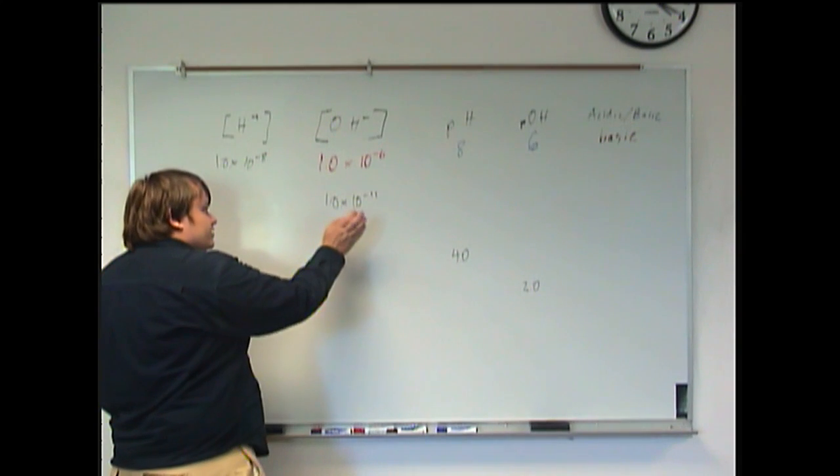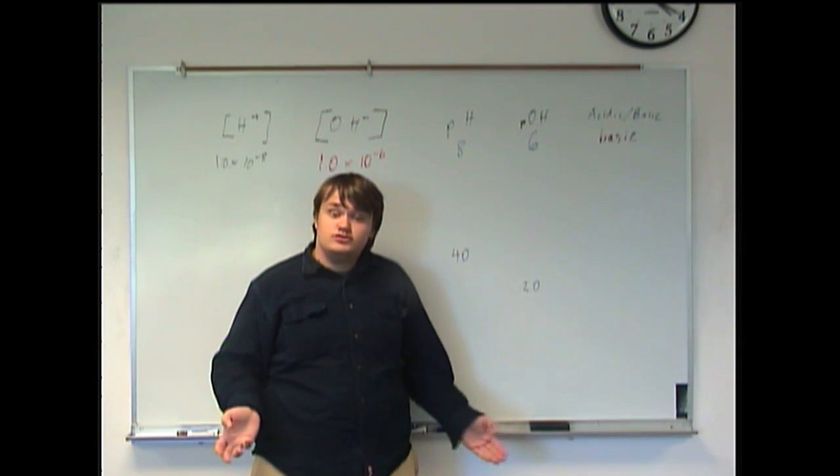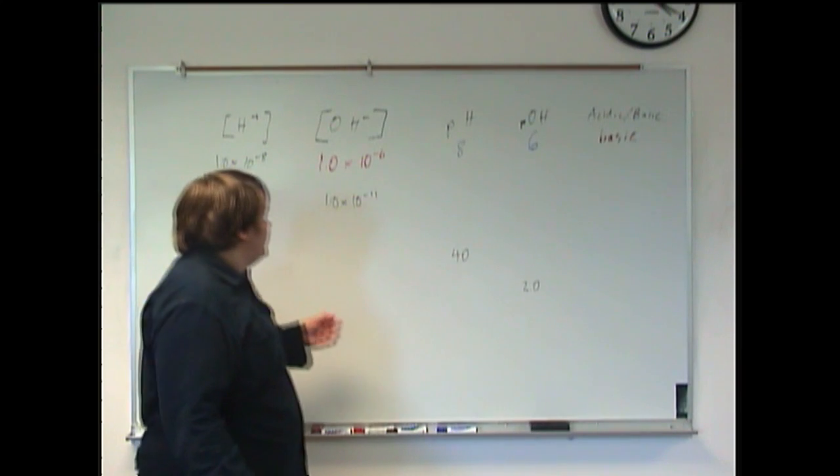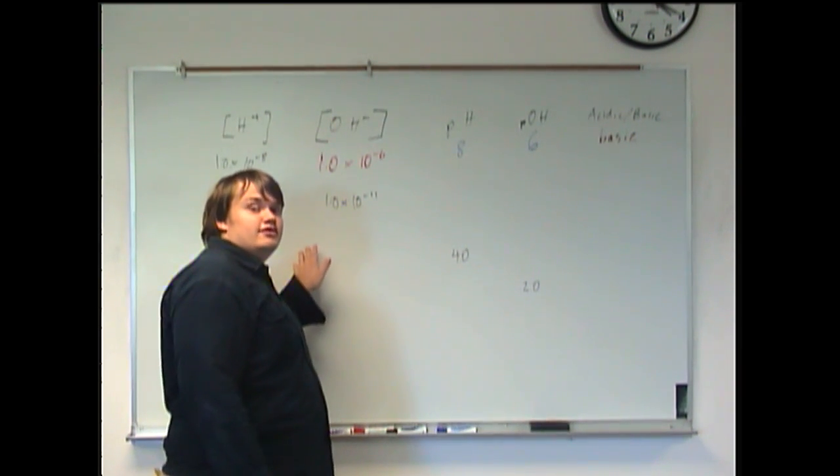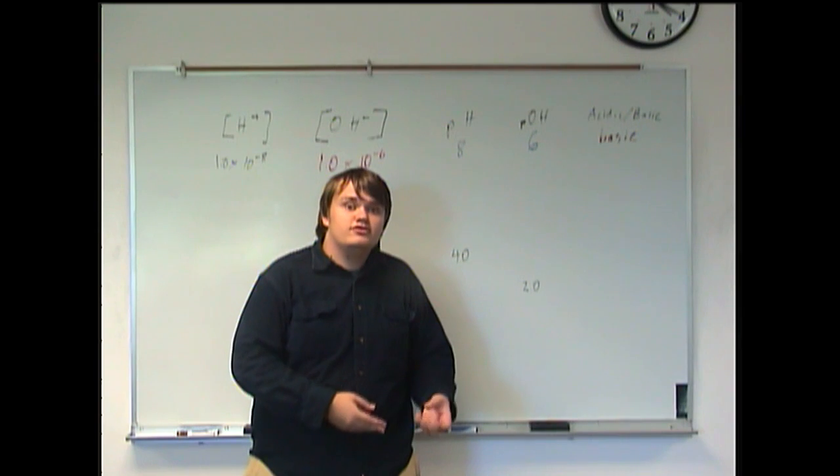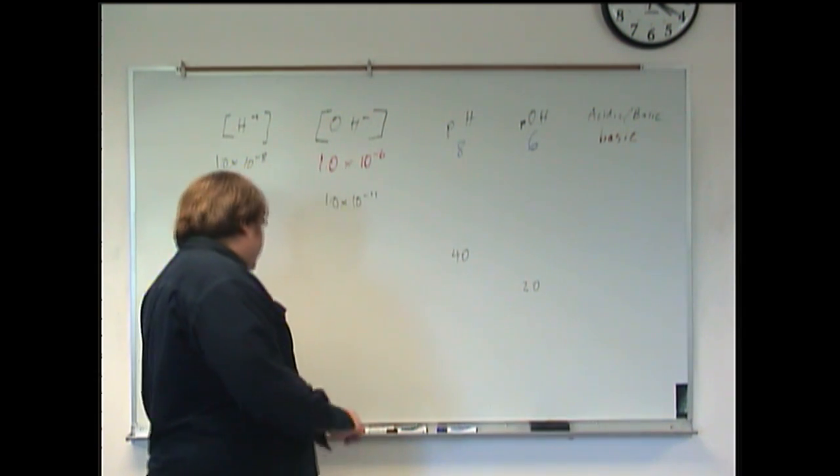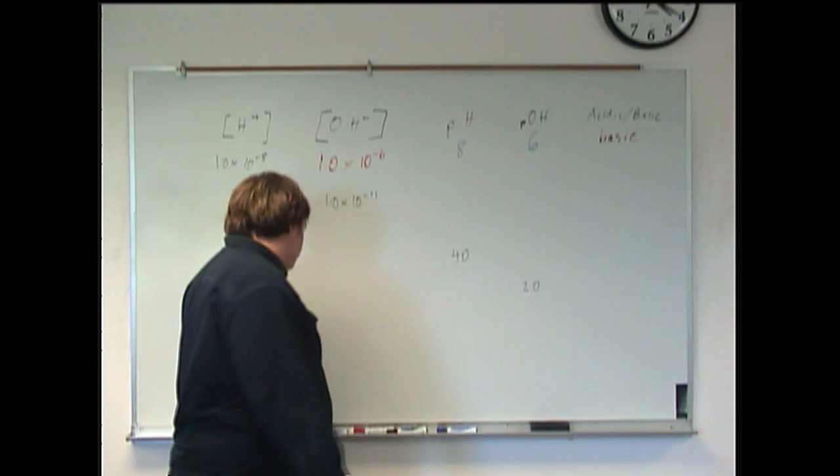Now, moving on down here. This time, we're given the hydroxide ion concentration. And we want to find the hydrogen ion concentration. Again, it's multiplying the two together to get 1 times 10 to the negative 14. Figuring that out ahead of time,